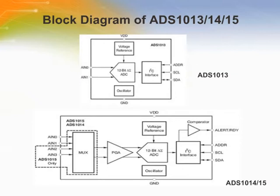The ADS1013/14/15 are very small, low-power 12-bit delta-sigma analog-to-digital converters featuring an onboard reference and oscillator. Data is transferred via an I2C compatible serial interface, and four I2C slave addresses can be selected. The device operates from a single power supply ranging from 2V up to 5.5V and can perform conversions at up to 3300 samples per second. An onboard PGA is available on the ADS1014 and 1015, offering input ranges from the supply to as low as plus or minus 256 millivolts, allowing both large and small signals to be measured with high resolution. The ADS1015 also features an input multiplexer that provides two differential or four single-ended inputs.